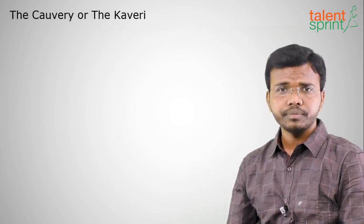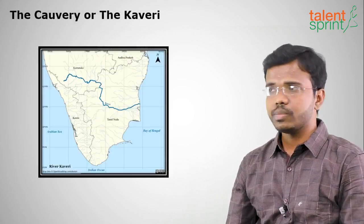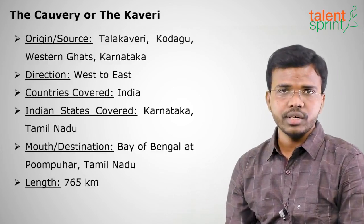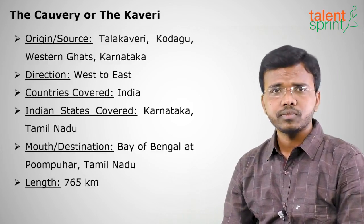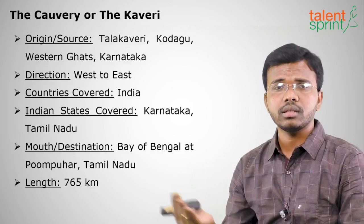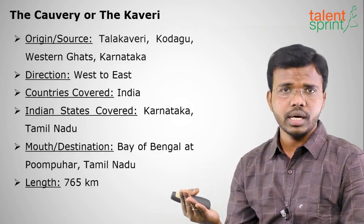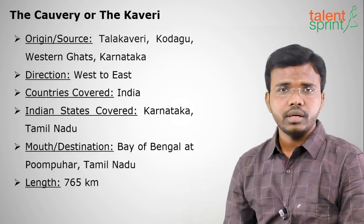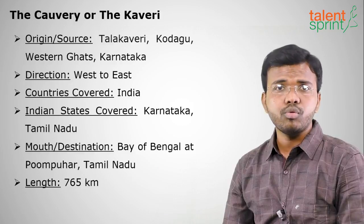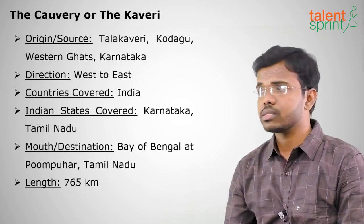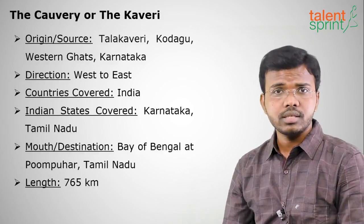The Kaveri is a very disputed river. Its origin is at Talakaveri in Kodagu district of Karnataka, in the Western Ghats, and it flows towards Tamil Nadu. States covered are Karnataka and Tamil Nadu, flowing west to east. The mouth is at Poom Puhar in Tamil Nadu, meeting the Bay of Bengal. The length is 765 kilometers.